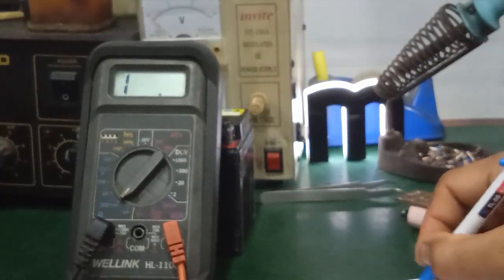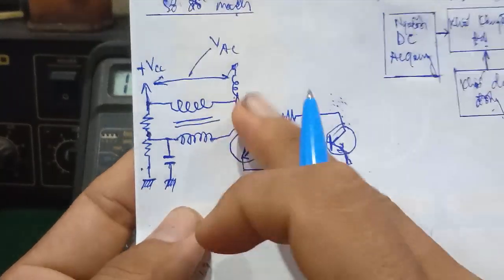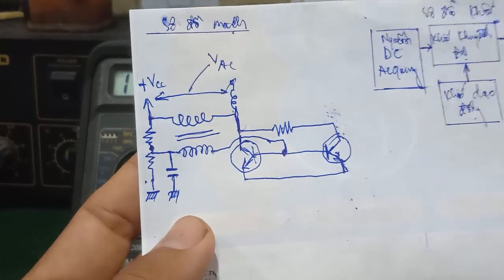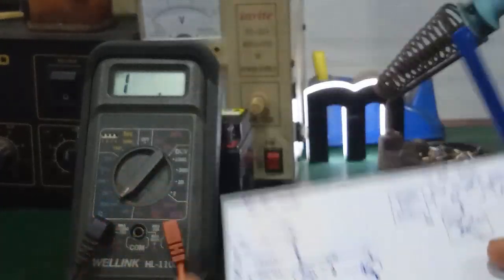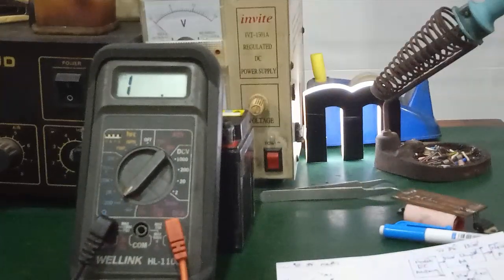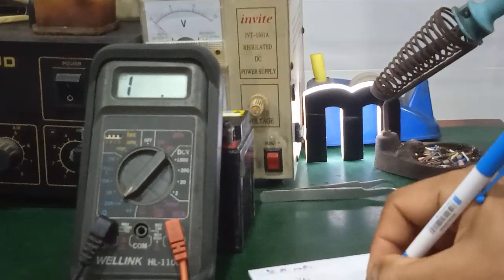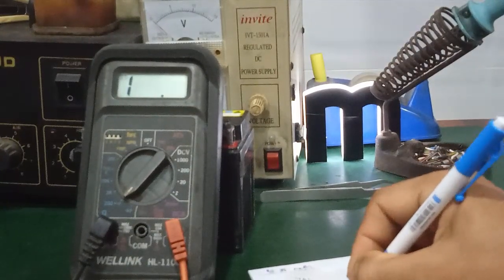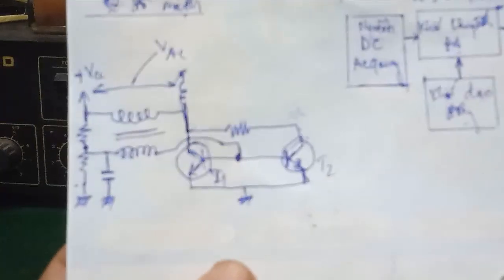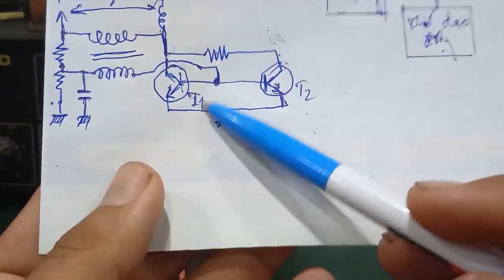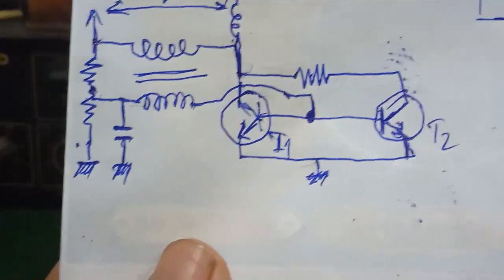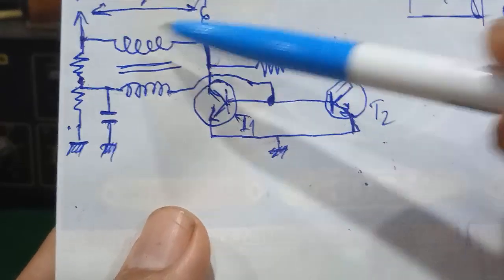Ở đây cái lõi ferric nó có từ thông. Có nghĩa là khi mà dòng điện nó chạy qua một cuộn dây thì sẽ có cái điện áp ở cái đầu cuộn dây còn lại. Gọi là cái cuộn này là sơ cấp, còn cái này là thứ cấp, và một cuộn phụ nữa. Nó có hình dáng giống như một cái biến áp. Cái chức năng của con transistor T1 là chức năng như một cái khóa điện tử, nó nối cái điểm C này xuống mát. Mà cái điểm C này chính là cái điểm giữa, giữa hai cuộn dây.